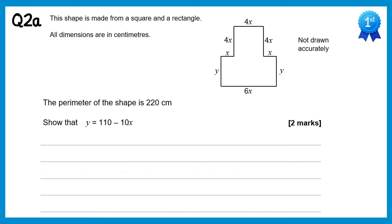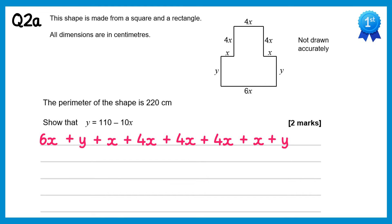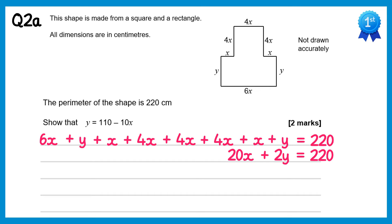For this question we need to find the perimeter. To do that I'll add up all of the sides, starting with 6x at the bottom then going round: plus y, plus x, plus 4x, plus 4x, plus 4x, plus 4x, plus x, plus y and we're told in the question this must add up to 220. Collecting like terms gives us 20x plus 2y equals 220. Subtract 20x from both sides, then divide by 2, and you'll get y equals 110 minus 10x.